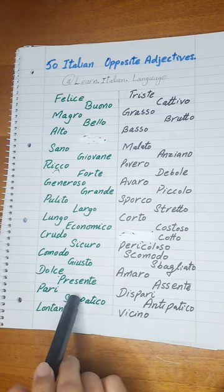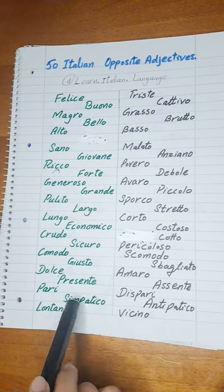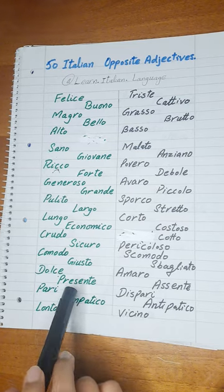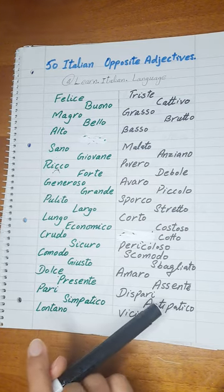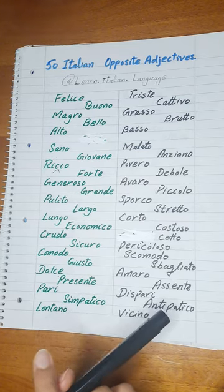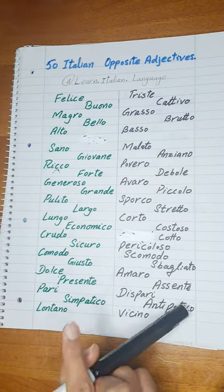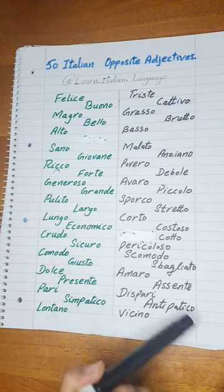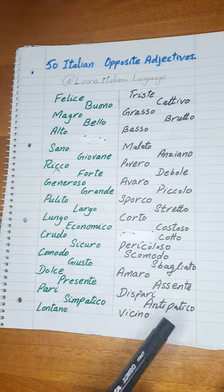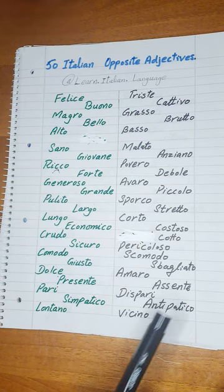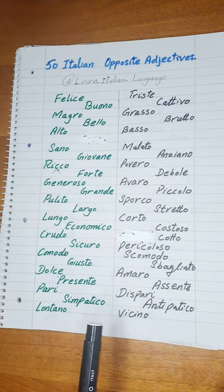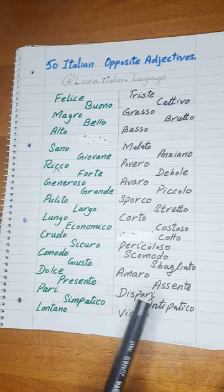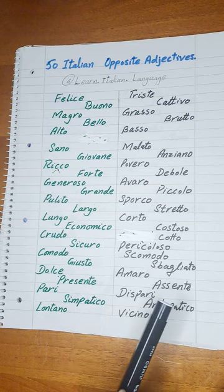Next is Presente. Presente means present. The opposite of Presente is Assente. Assente means absent. Presente — present. Assente — absent.